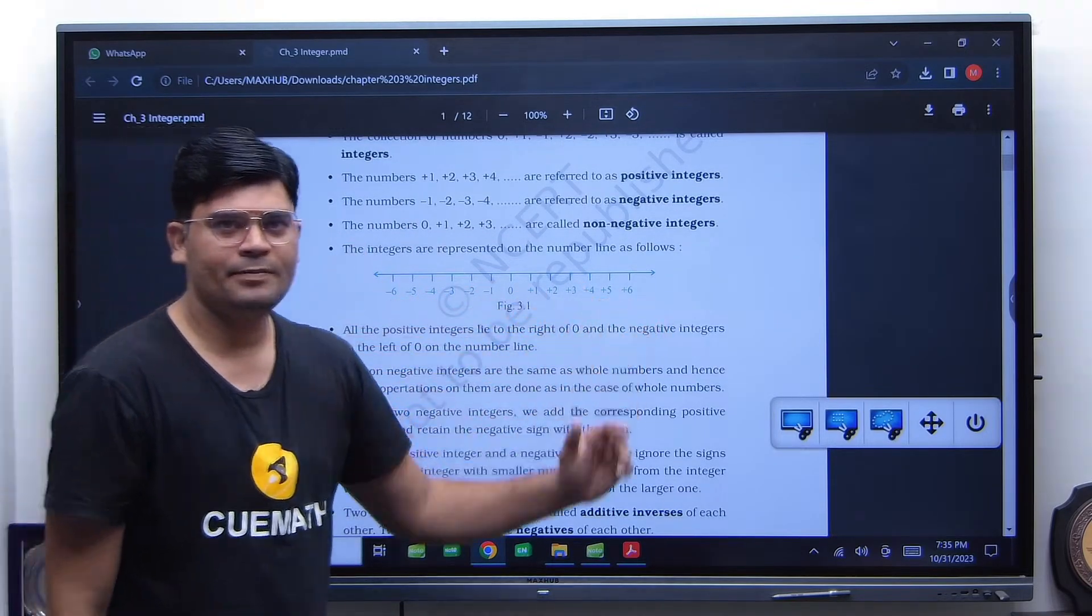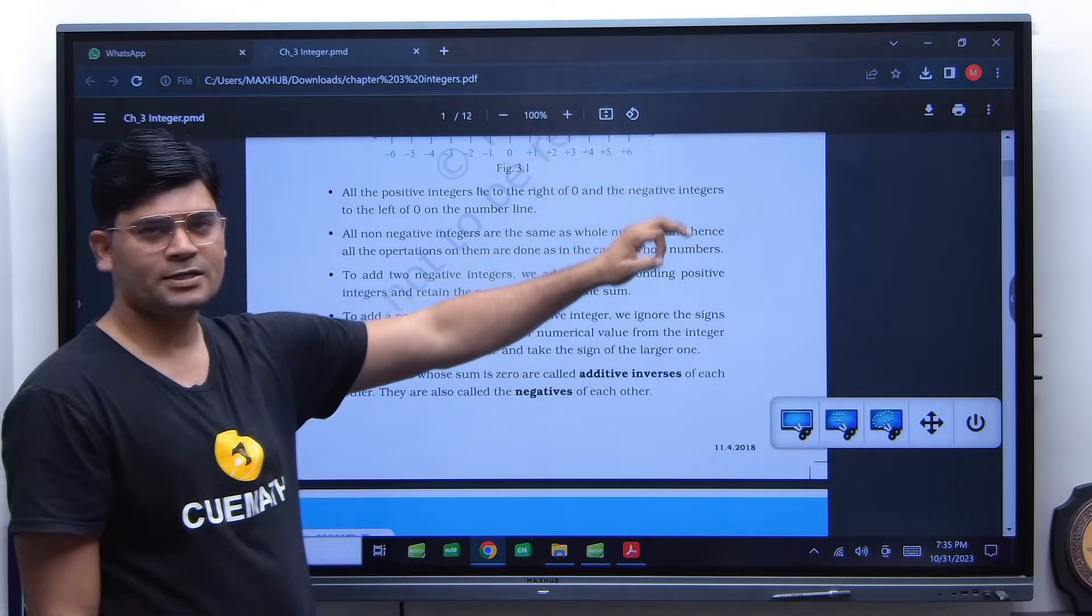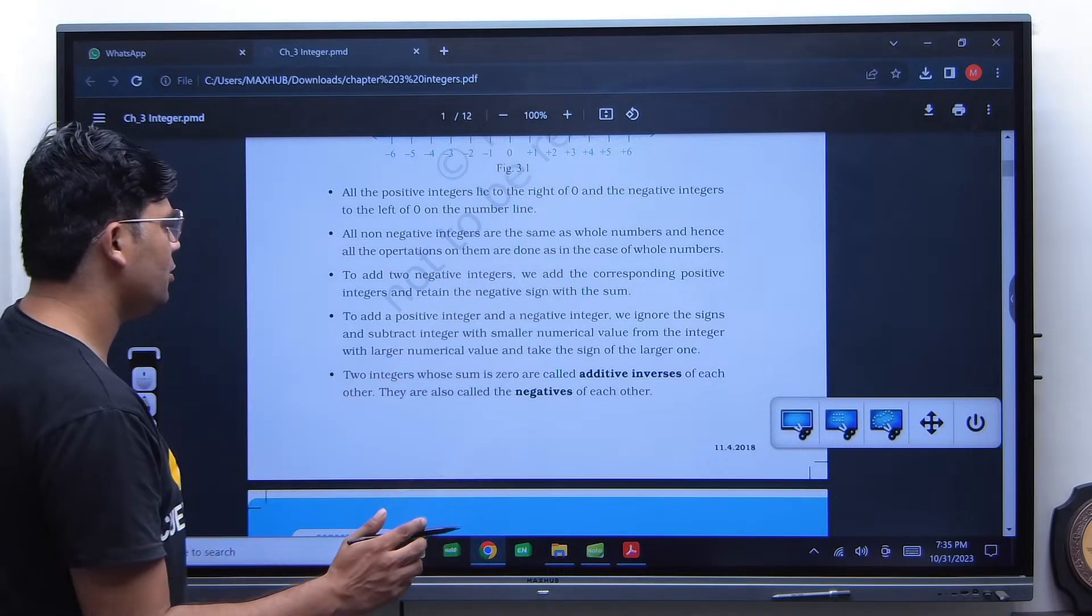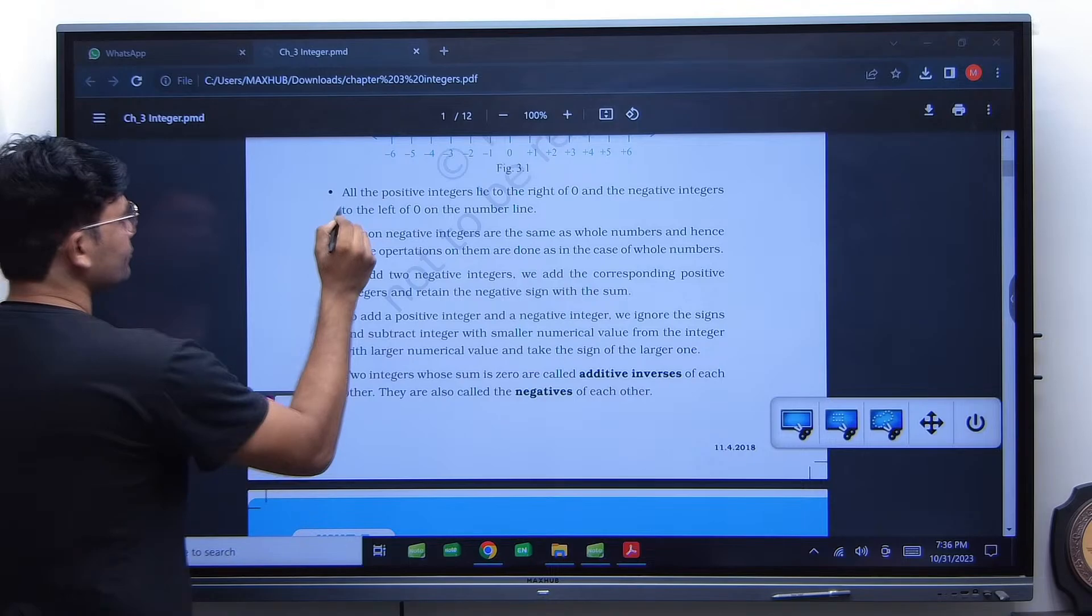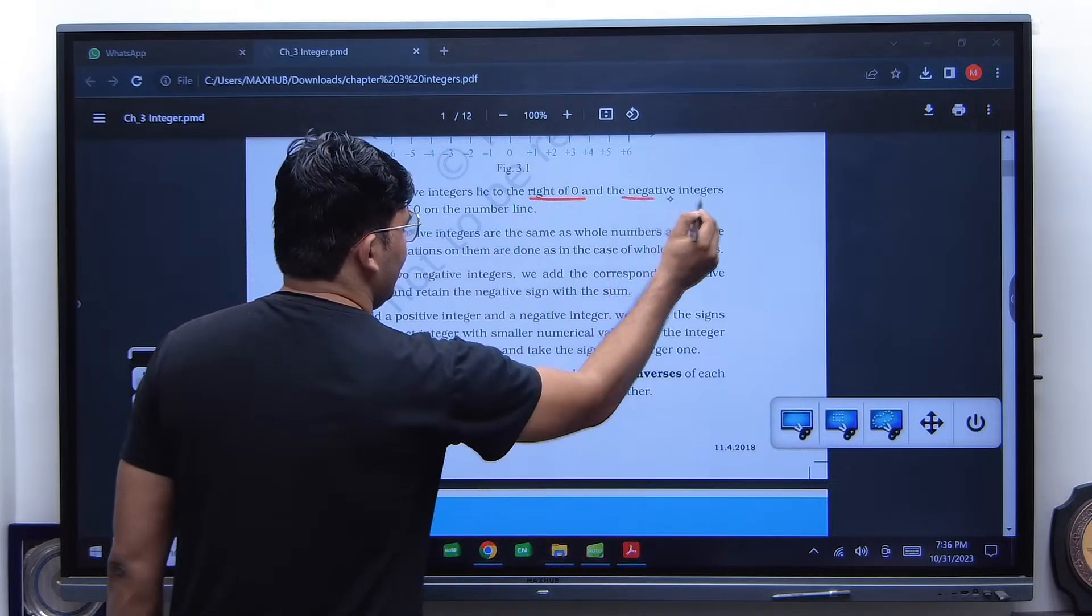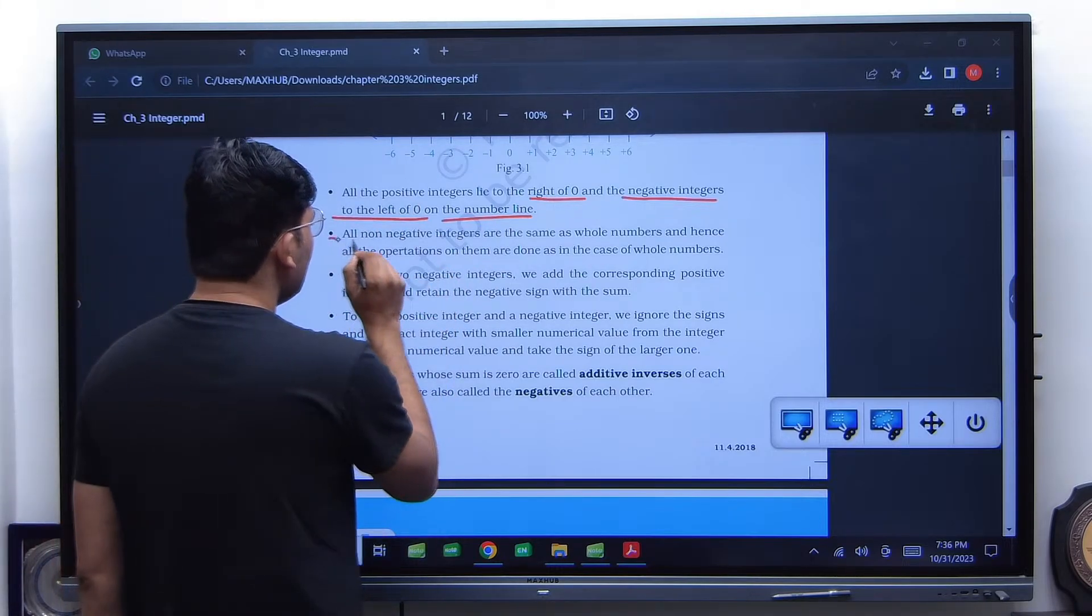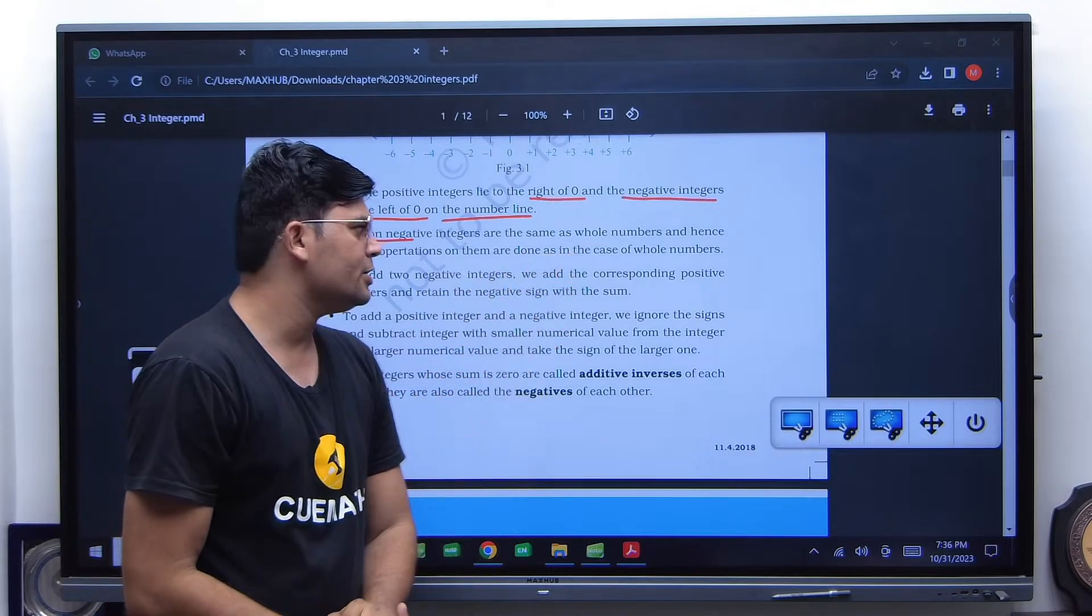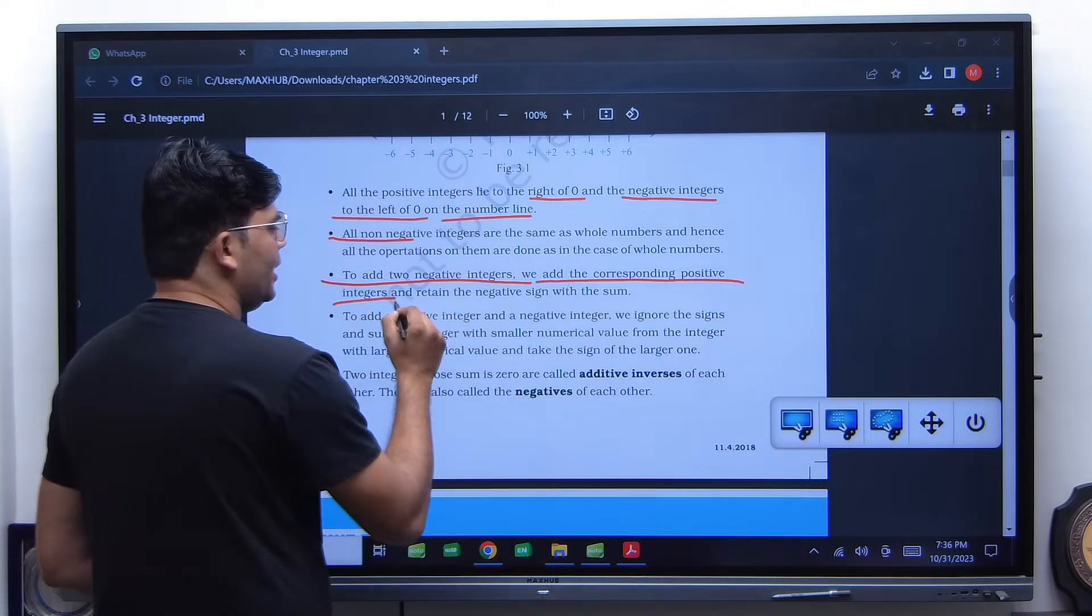So, integers on the number line can be represented as follows. I will be quick on this. All the positive integers lie to the right of zero. So these are one word answers. This will be fill in the blanks. Dash of zero, dash integer. So you have to be very careful while understanding all this. All the positive integers lie to the right of zero and the negative integers to the left of zero on the number line. Negative integers left of zero. All non-negative integers are the same as whole numbers, and hence all the operations on them are done as in the case of whole numbers. To add two negative integers, we add the corresponding positive integers and retain the negative sign with the sum.